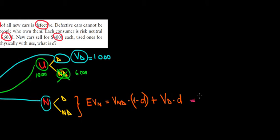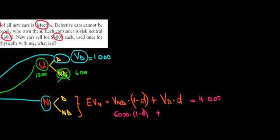The expected value of a new car must equal four thousand dollars, because that's the market price — consumers cannot change the market price, they have to adapt by accepting the probability of getting a defective car. So we set up the equation: six thousand times one minus D, plus one thousand times D, equals four thousand dollars.